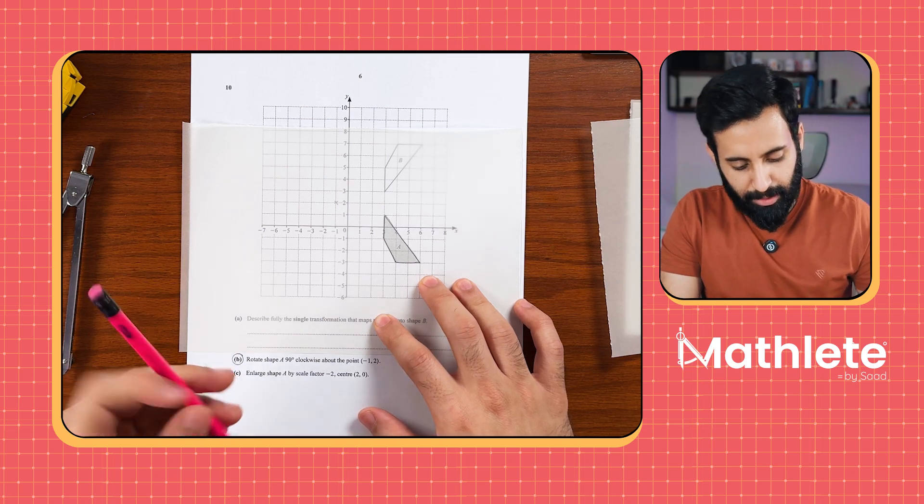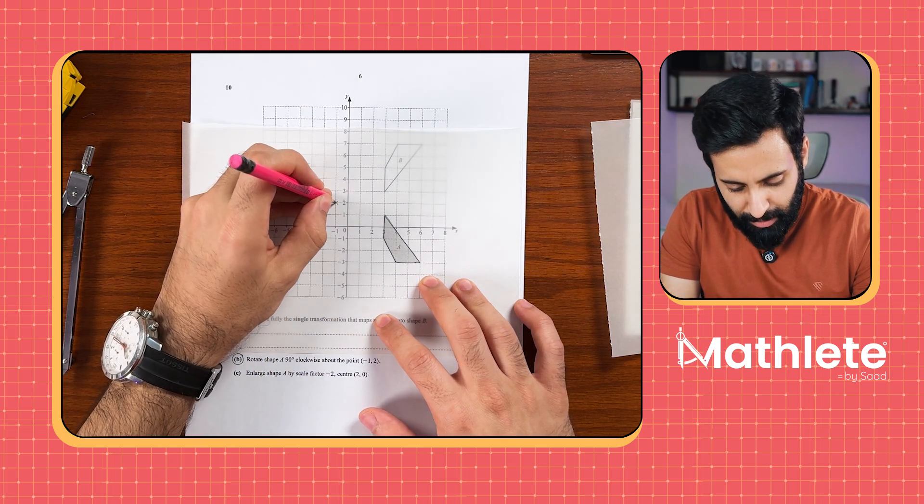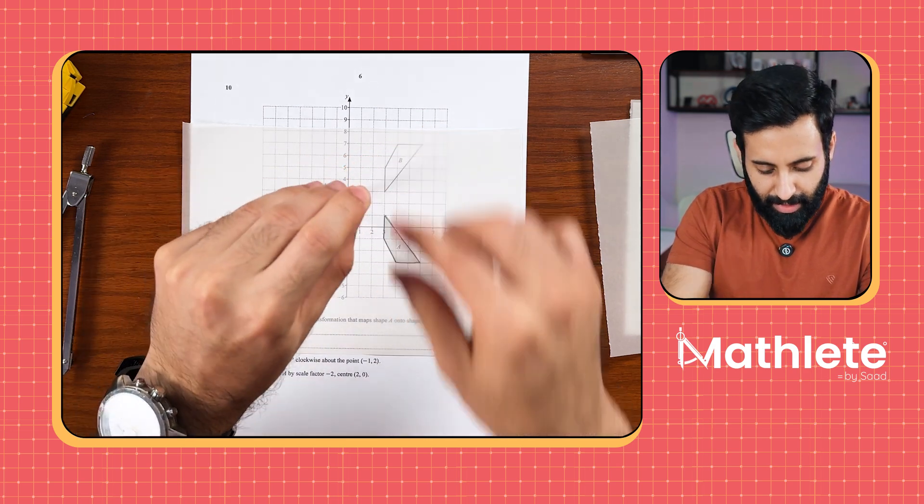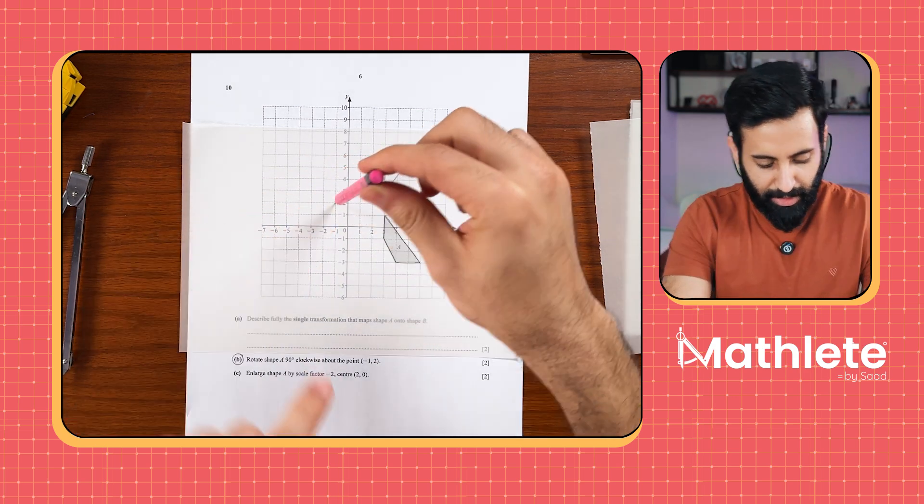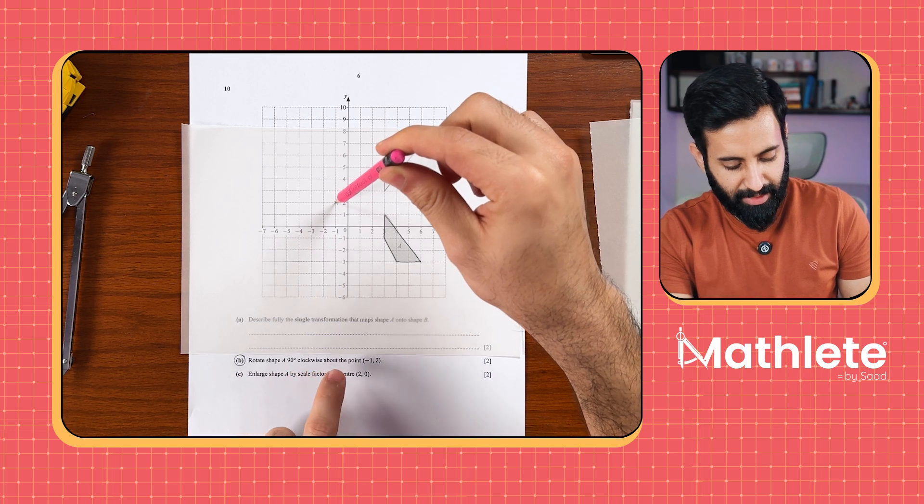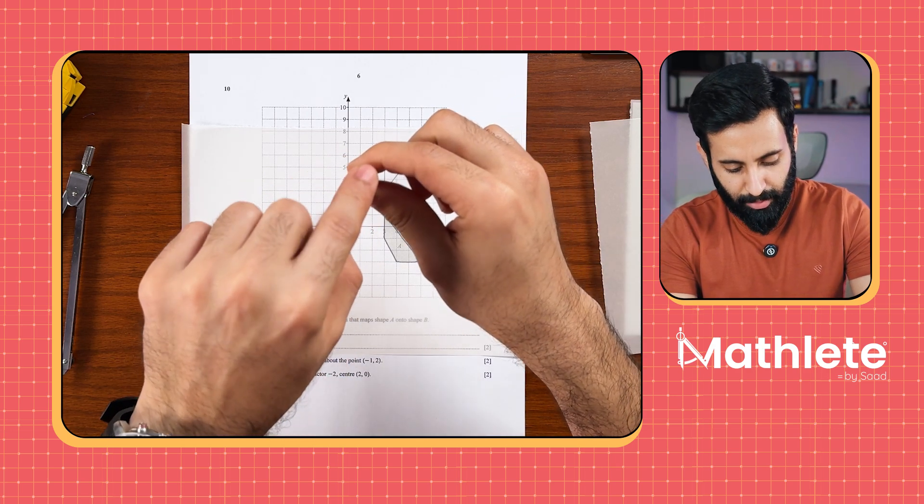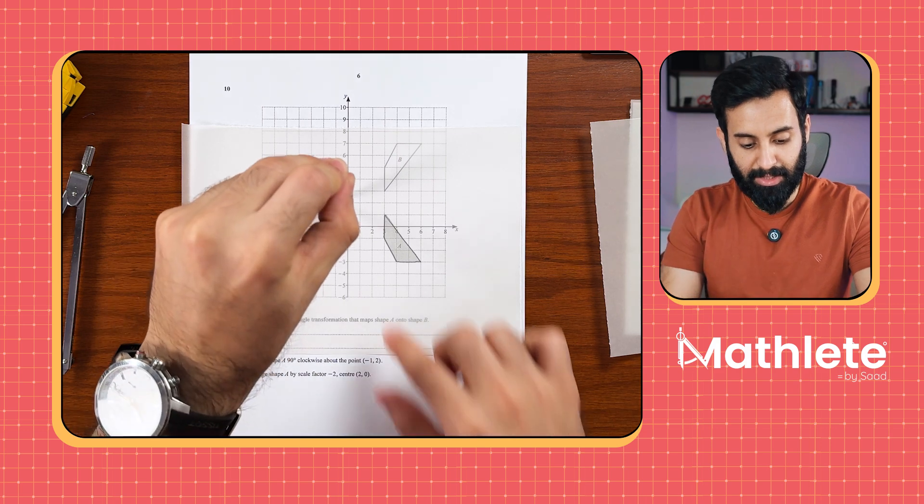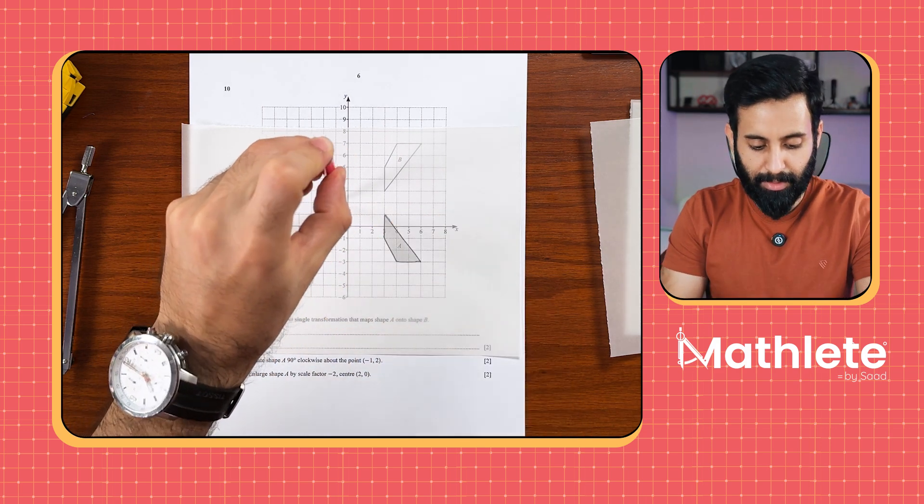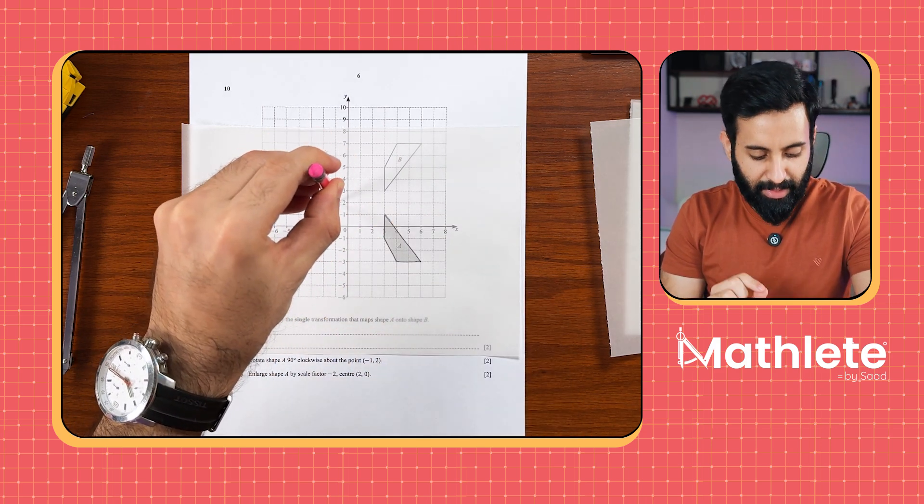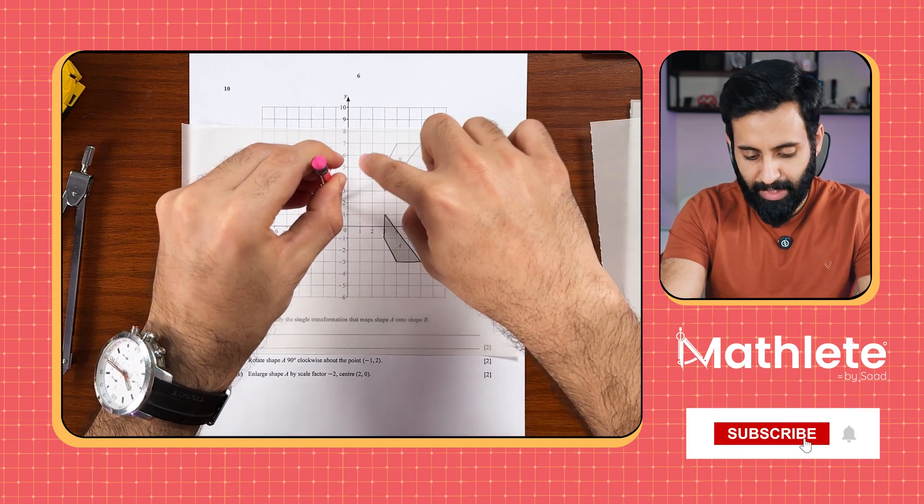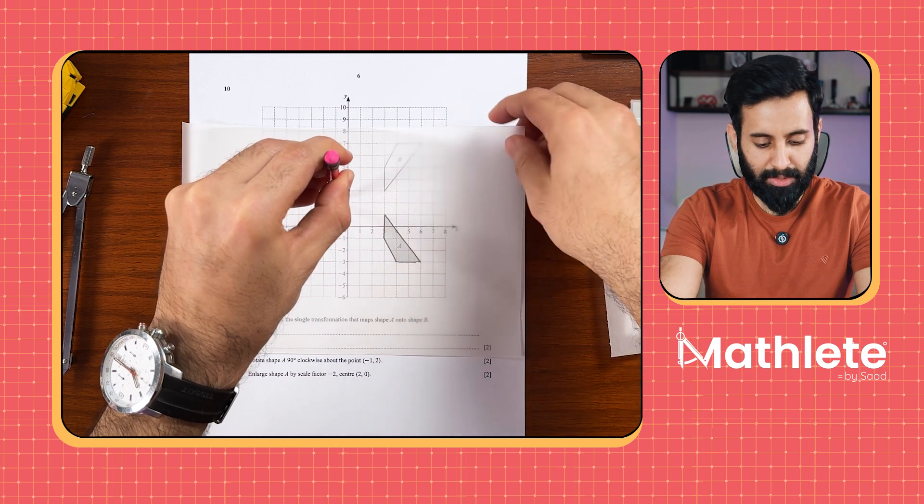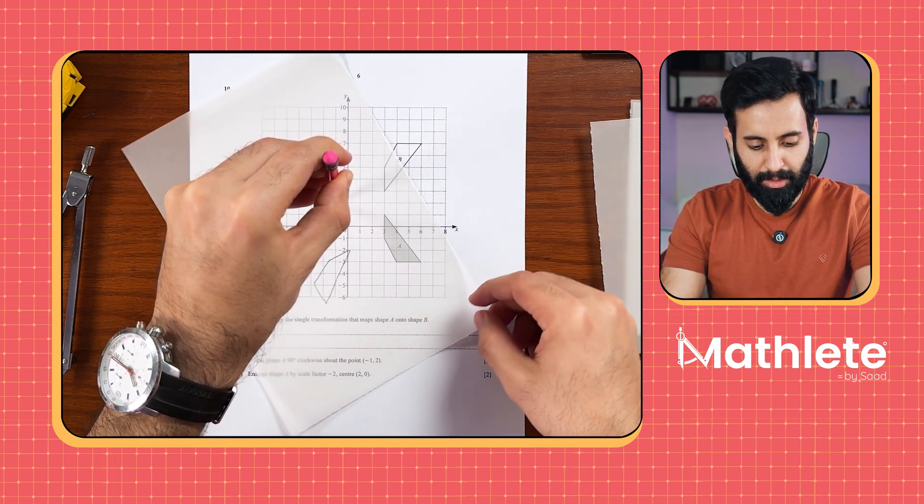Next what you want to do is you want to hold the tracing paper from the center. You can place your pencil on it and then how are we supposed to rotate? We're supposed to rotate it 90 degrees clockwise about the point minus 1 comma 2. So now I'm going to rotate the tracing paper while holding it firmly from the center, 90 degrees clockwise. This is it 90 degrees clockwise.